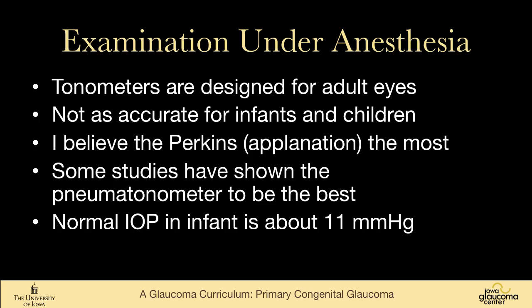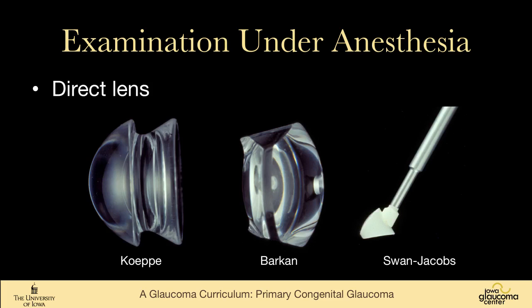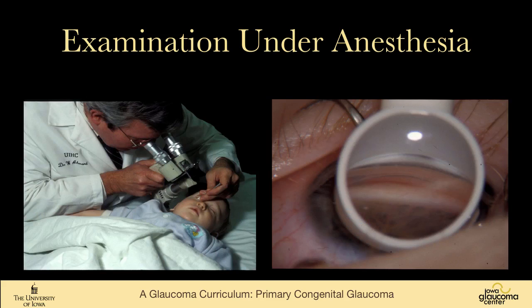For gonioscopy in these babies, there are some direct lenses we can use. The Koeppe lens is the prototype lens; the Barkan is more of a surgical lens. The Swan-Jacob lens, which is my preferred lens, is just a little piece of a Koeppe lens on a handle. A sedated baby can be examined using a portable slit lamp and a Swan-Jacob lens to look at the angle — the baby's head is turned away, and you look directly at the angle to get a clear view.